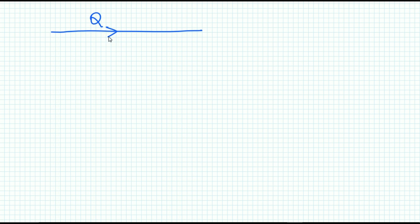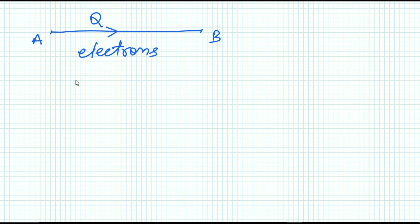Let me explain the flow of current in detail. When I say that charge is flowing through a conductor, what actually happens inside is that electrons are free to move inside the conductor, and it is the electrons which move from point A to point B.